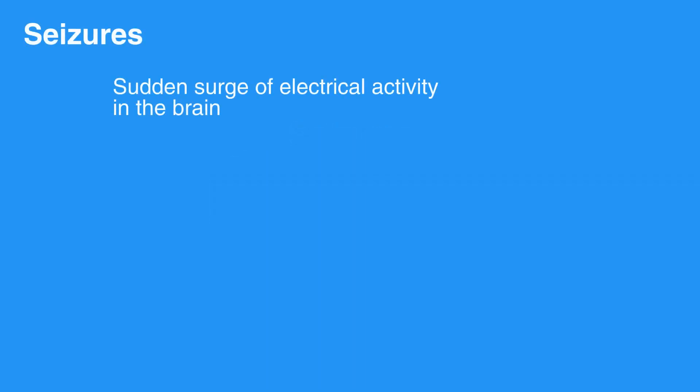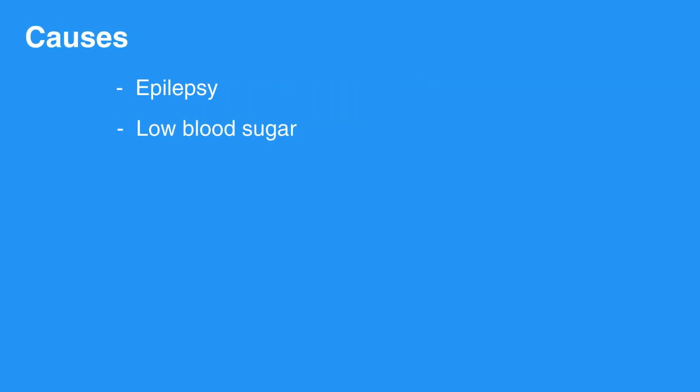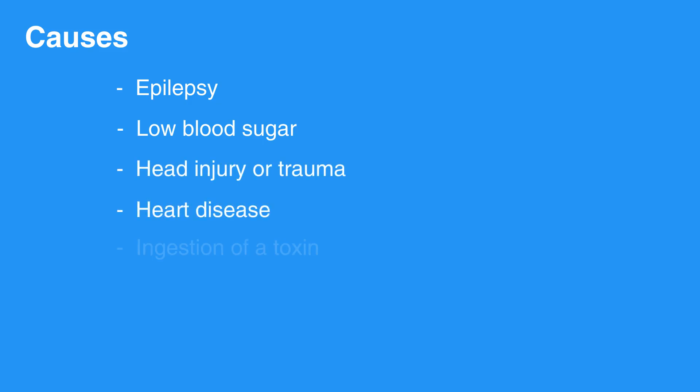A seizure is a sudden surge of electrical activity in the brain, or seizure-like activity, caused by epilepsy, low blood sugar, head injury or trauma, heart disease, ingestion of a toxin, or heat-related illness.